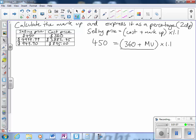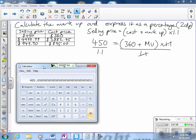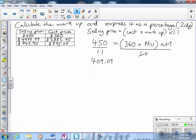So if I do that, that will cancel out on that side and over here I divide that by 1.1. $450 divided by 1.1 is $409.09. So $409.09 equals $360 plus the markup.